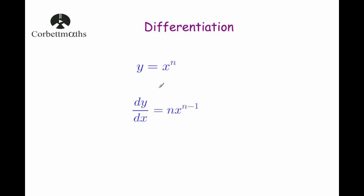In this video we're going to use the general rule. So if you were given y equals x to the power of n, when you differentiate it, or when you find dy by dx, the answer would be n times x to the power of n minus 1. In other words, you bring the power down and you reduce the power by 1. And that's how you would differentiate.